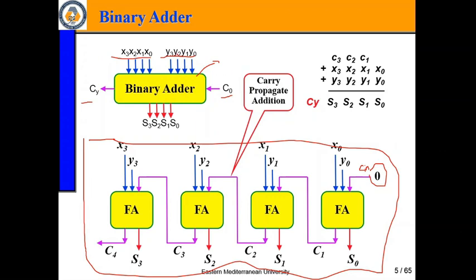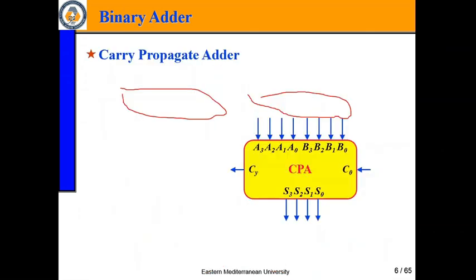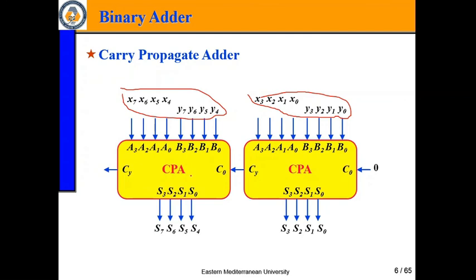If I want to add an 8-bit number, the total is 4 bits times 2 equals 8 bits. But if I want to add a 16-bit number, I put 4 bits in one IC and 4 bits in another IC, then join the first IC's carry output to the next IC's carry input. This way I can add a total 16-bit number. So this is the half adder, full adder, and carry propagation adder.